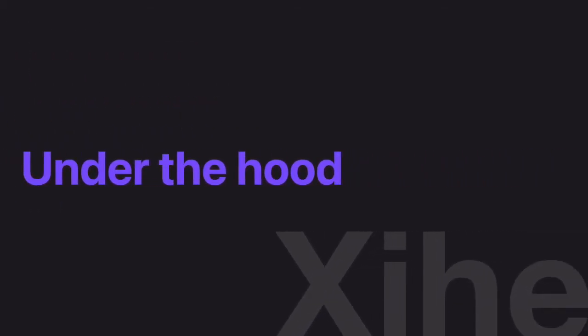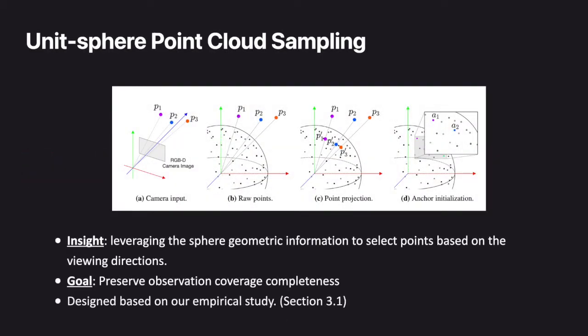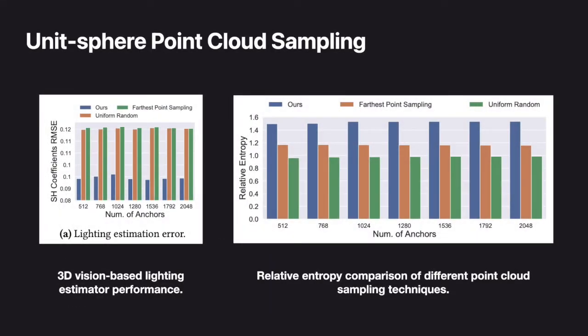Let's go into the key system components of XIHE. Instead of randomly sampling points in the point cloud, we leverage the sphere geometric information to select points based on viewing directions to maximize observation coverage completeness. Taking the points from a point cloud, our sampling algorithm generates a set of anchor points colored by the point cloud and evenly distributed on a unisphere surface.